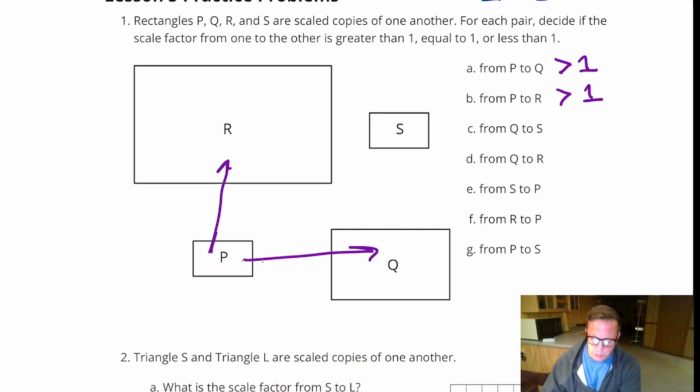From Q to S. Now that went from bigger to smaller. Q is not the biggest shape there is, but Q is bigger than S. So that's going to be less than 1.